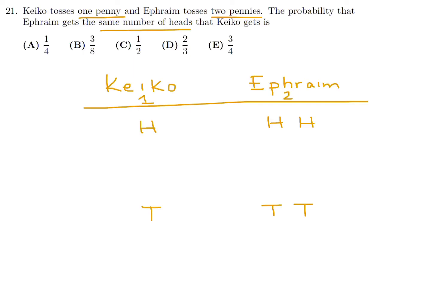The first combination is HHH — they toss their coins and they all get heads. The next is Kiko gets a head but Ephraim gets heads and tails: first penny heads, second penny tails. Then H, tails and heads. And finally H, tails, tails.